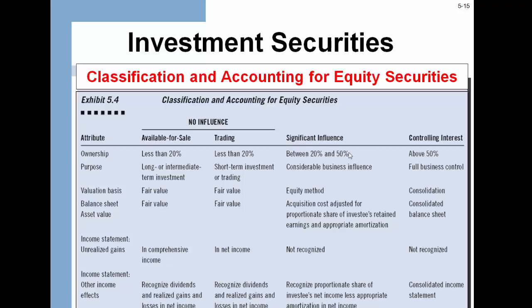Significant influence means holding between 20% and 50% of the stock, giving considerable business influence. You need to record this using the equity method. Income or loss is not recognized on the income statement; it is only recognized on the balance sheet. If you have a controlling interest — greater than 50% — you do a consolidation. There are whole classes set up around business consolidations, but that gives you a pretty good overview.